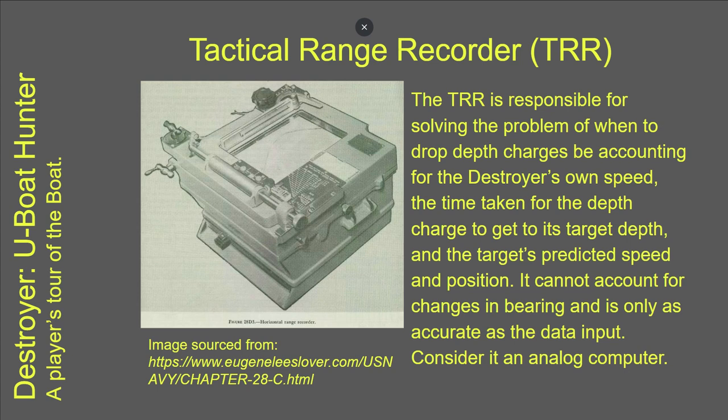This is a screenshot of the TRR taken from Eugene Lee Slover's website. It's a fairly good representation of what we see inside Destroyer, and you can see it's a fairly big box — it's basically an analog computer that does this for us. What it will do is solve the problem of when to drop the depth charges, and you do this by accounting for the destroyer's speed, the time taken for the depth charge to get to its target depth, and the target's predicted speed and position.